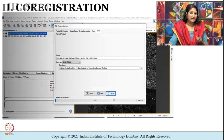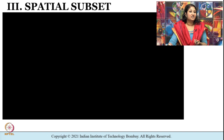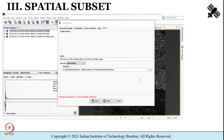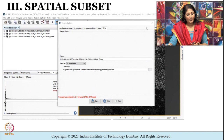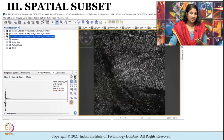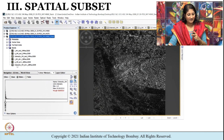After co-registration, the SLC data is loaded in SNAP and visible in the Product Explorer. Processing a complete scene — a large image — can be highly computationally demanding, so we can subset the data set if required. I have completed co-registration and the output is visible in the Product Explorer. To make processing faster, I am going to subset the image by selecting a small region.